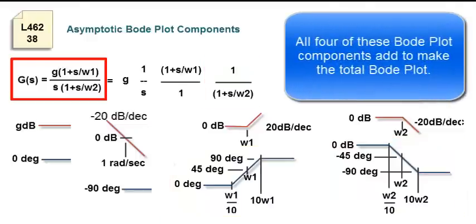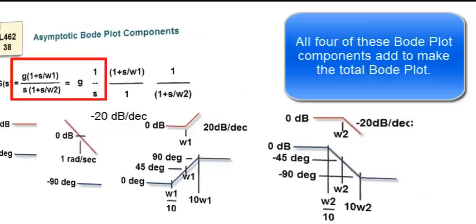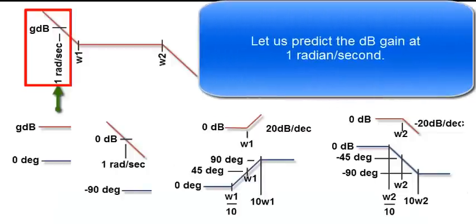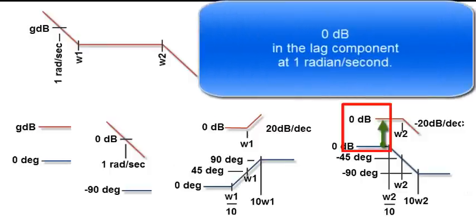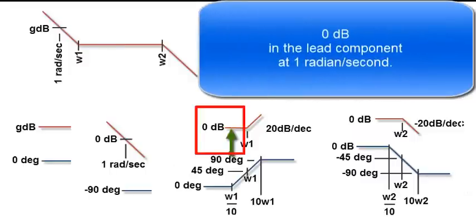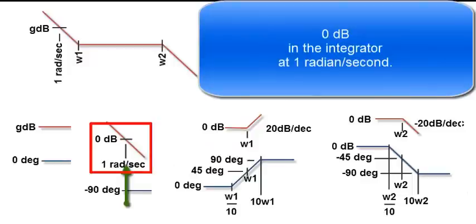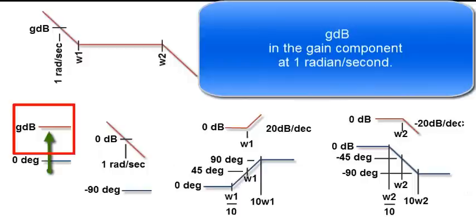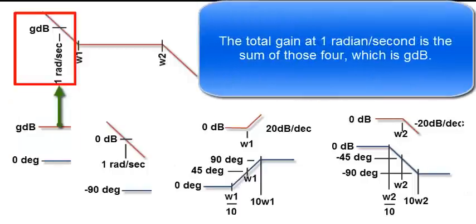All four of these Bode plot components add to make the total Bode plot, which is the sum of the four components. Let's predict the dB gain at one radian per second. We have zero dB gain in the lag component, zero dB gain in the lead component, and zero dB gain in the integrator component at one radian per second, plus Gdb gain in the gain component. The total gain at one radian per second is the sum of those four, which is Gdb.